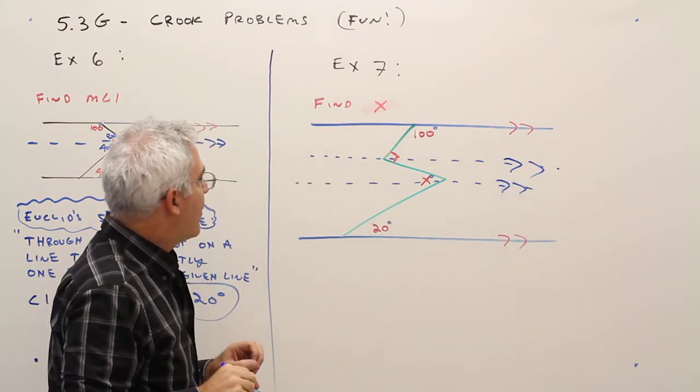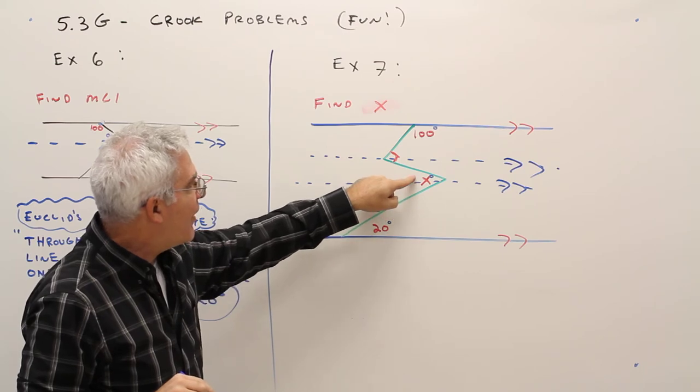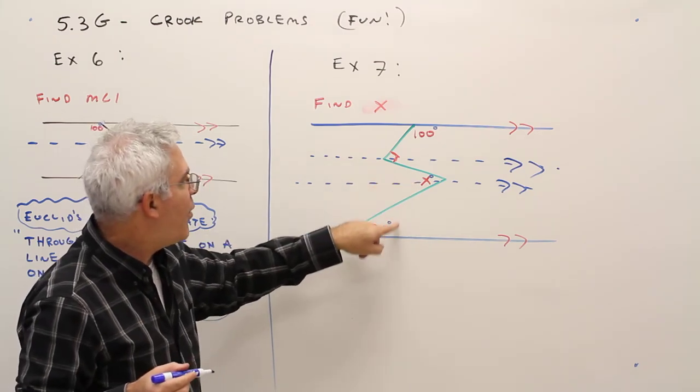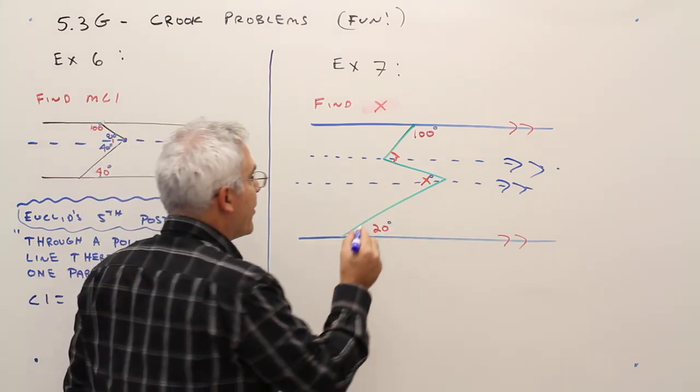Alright, so I'm trying to find x. If I could find that chunk and that chunk, I'd be good to go. So 20 there, 20 there, alternate interior angles.